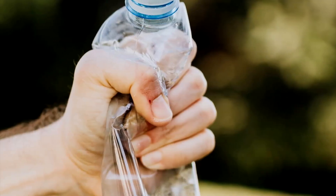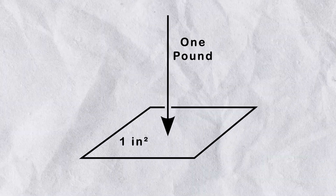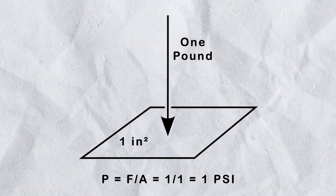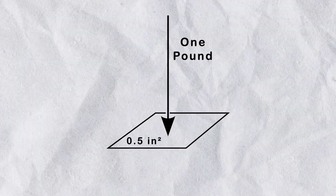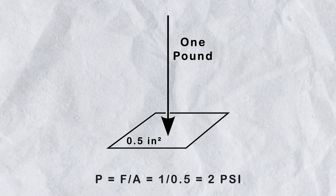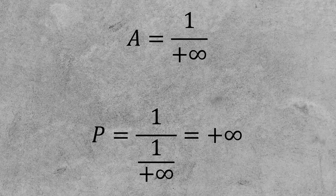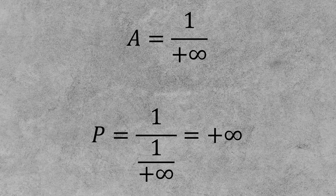Pressure is defined as force acting on a cross section. One pound of force acting upon one square inch equals one psi. If we decrease the area to half an inch, pressure doubles to two psi. If we keep shrinking the area until we reach an infinitely small point, any force applied to it would create infinite pressure.